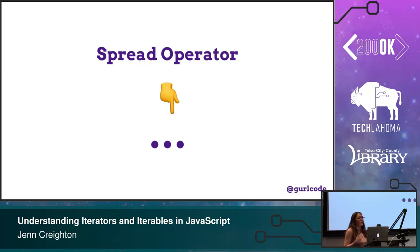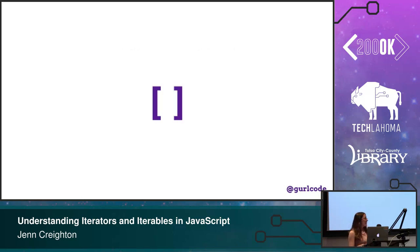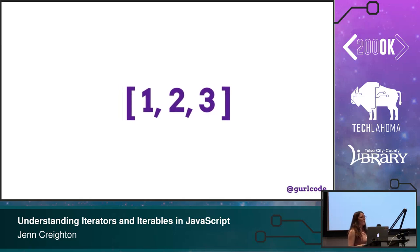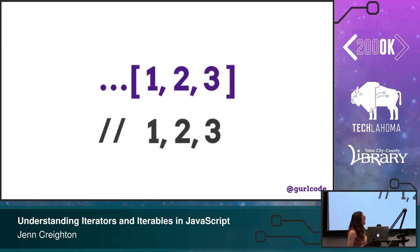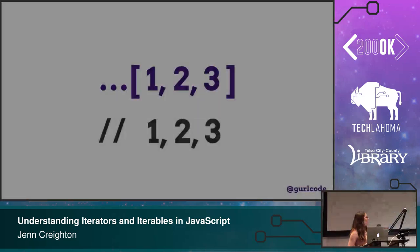The spread operator, if you're not familiar with it, is new as of ES6 — so relatively new to the language. ES6 was a big addition. The spread operator you mostly are going to see used with arrays. What it's doing is taking each value out of the array and spreading it out into a comma-separated list. You can use this to spread values into another array, or use the spread operator to gather values into an array.